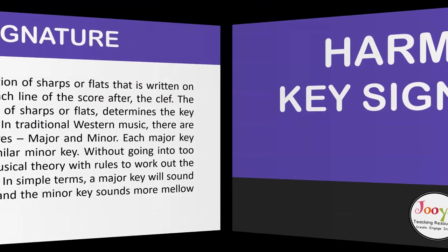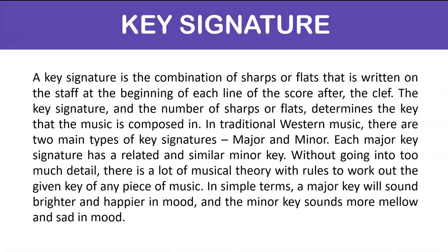A key signature is the combination of sharps or flats written on the staff at the beginning of each line of the score after the clef. The key signature and the number of sharps or flats determines the key that the music is composed in. In traditional Western music there are two main types of key signatures: major and minor. Each major key signature has a related and similar minor key. In simple terms, a major key will sound brighter and happier in mood, and the minor key sounds more mellow and sad in mood.